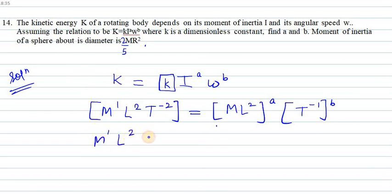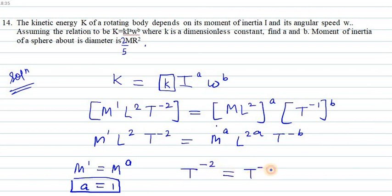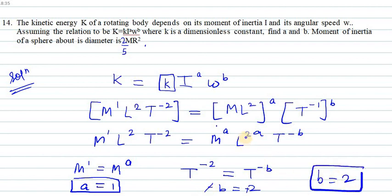On the left-hand side we have M¹L²T⁻², and on the right-hand side we have M^a · L^(2a) · T^(−b). Equating M: M¹ = M^a, so a = 1. Equating T: T⁻² = T^(−b), so −b = −2, giving b = 2. Therefore a = 1 and b = 2.